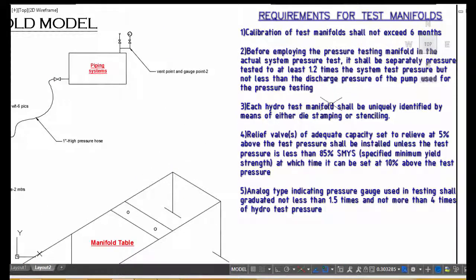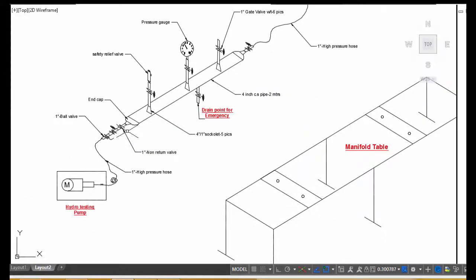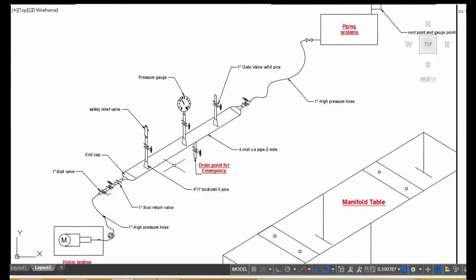For example, 100 bar means you have to test this manifold at 100 into 1.25 times for a 100-bar line.